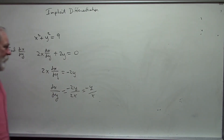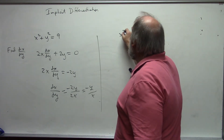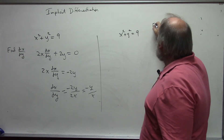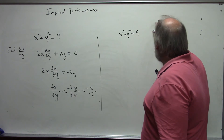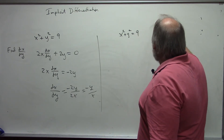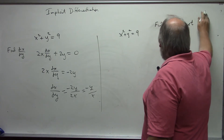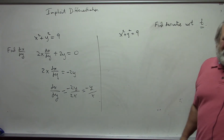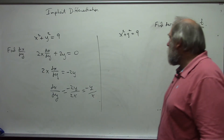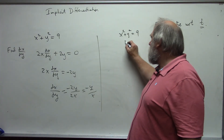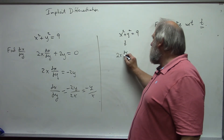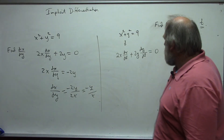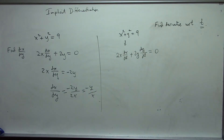We could also take the derivative of x² + y² = 9 with respect to t. In that case, both x and y are considered functions of t, so the derivative becomes 2x·(dx/dt) + 2y·(dy/dt) = 0. If we have two of these derivatives, we just leave it in that form.